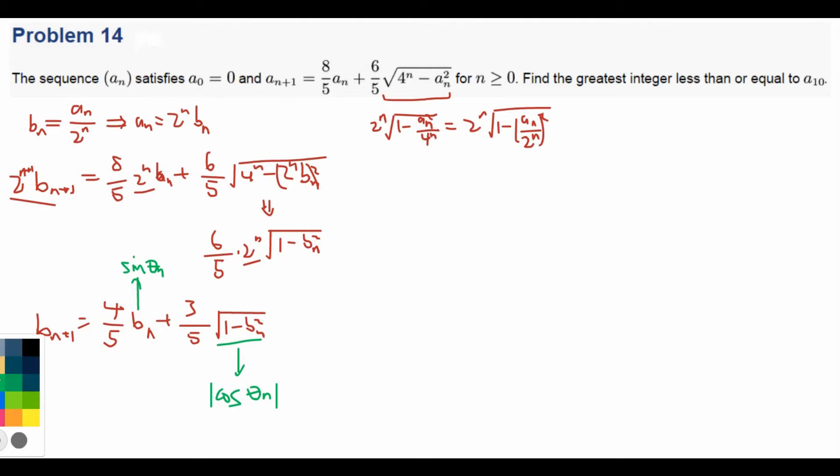Anyways, now the second thing that shows us that this might have to do with trigonometry is this 4/5 and 3/5. Because in a 3-4-5 triangle, if we call one of the angles phi, then we have that sine of phi is just 3/5 and cosine of phi is just 4/5. So this is sine phi, this is cosine phi.